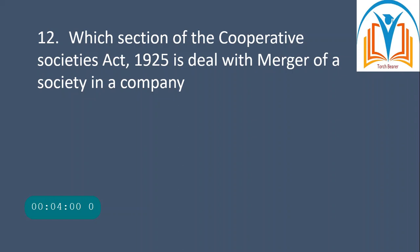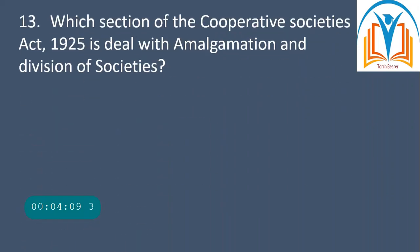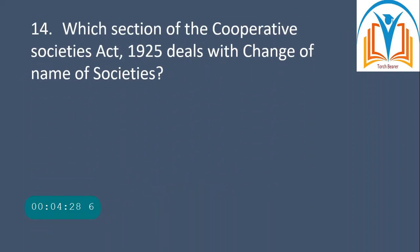Section 15A deals with merger of a society in a company. Next question: which section of the Cooperative Societies Act 1925 deals with change of name of a society? Section 14A deals with change of name of a society.